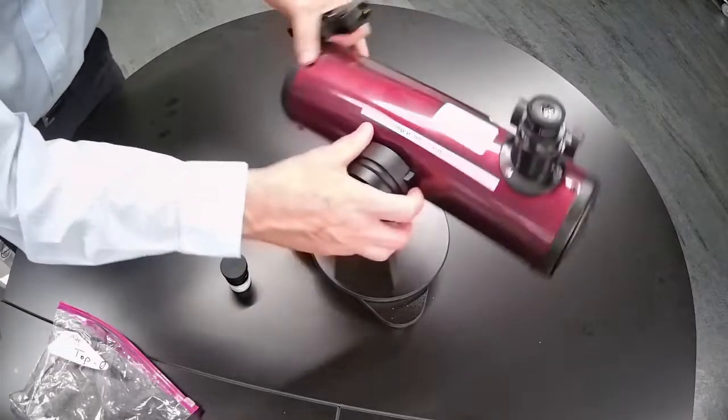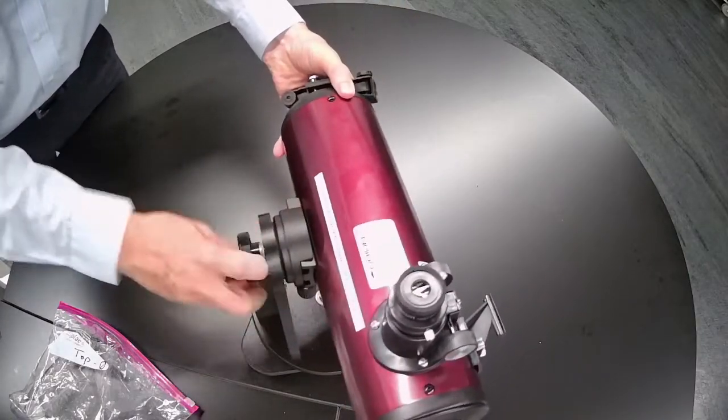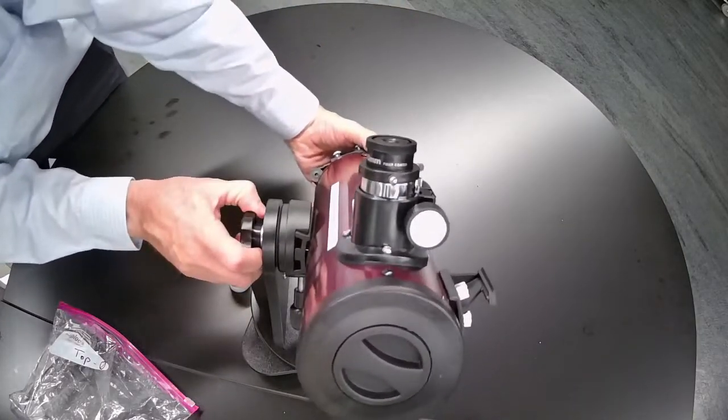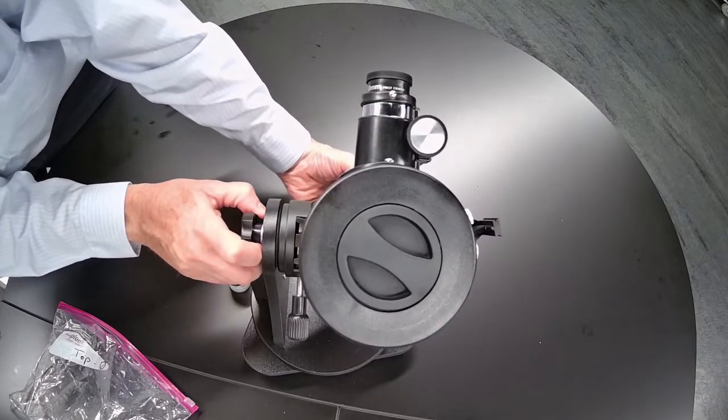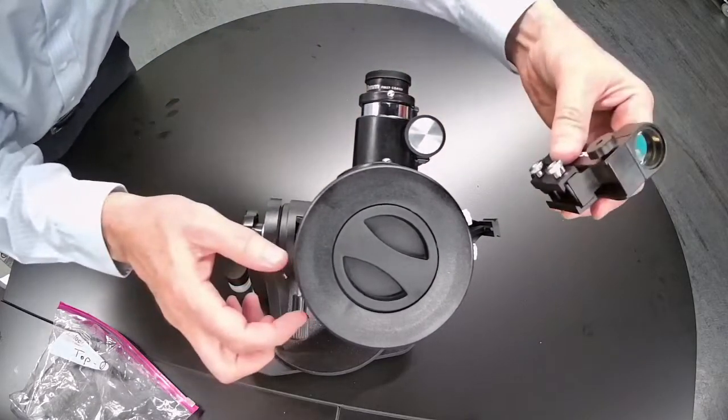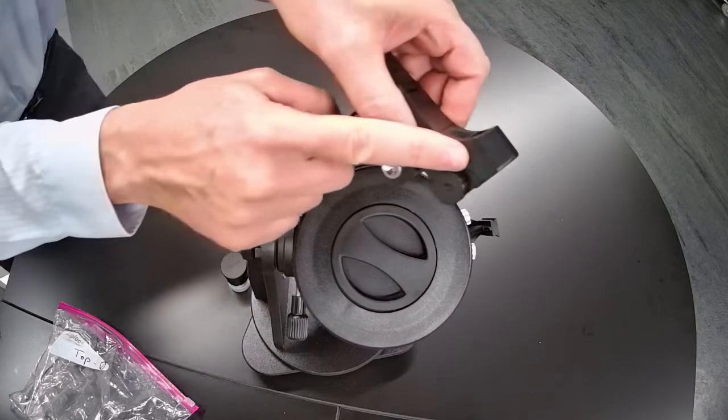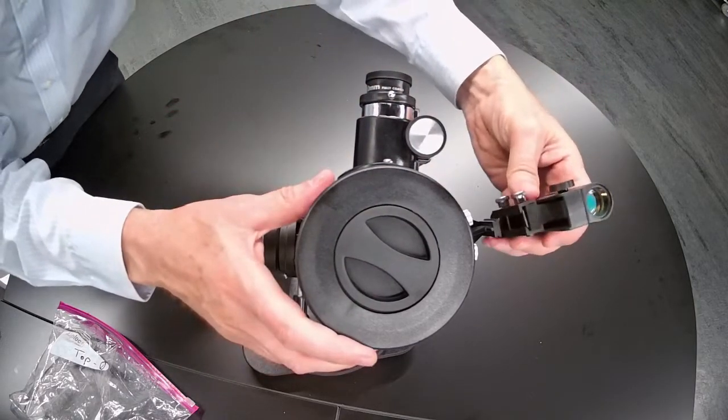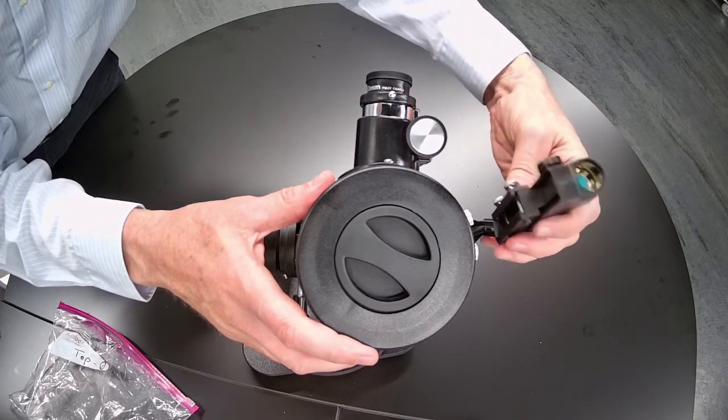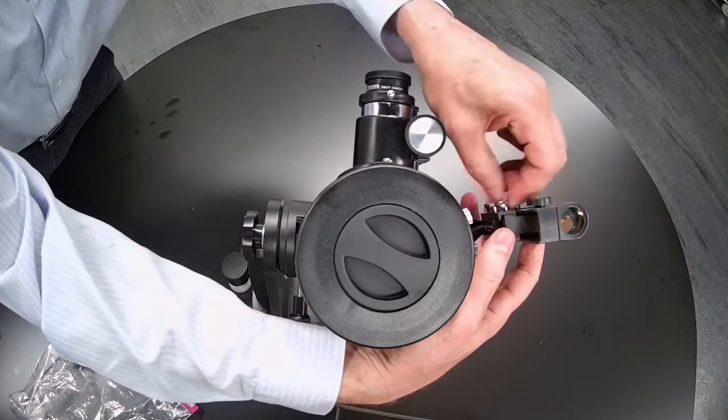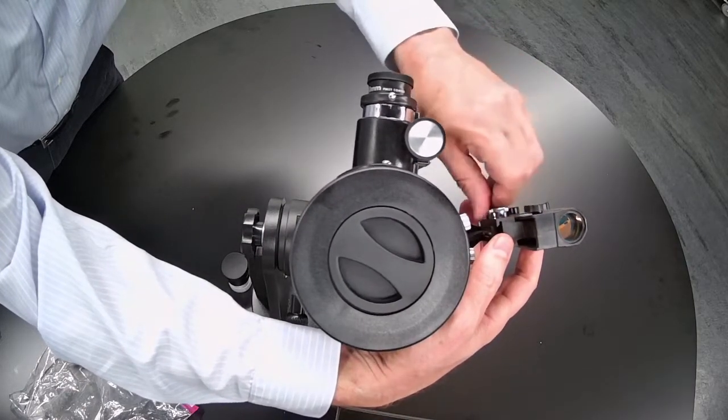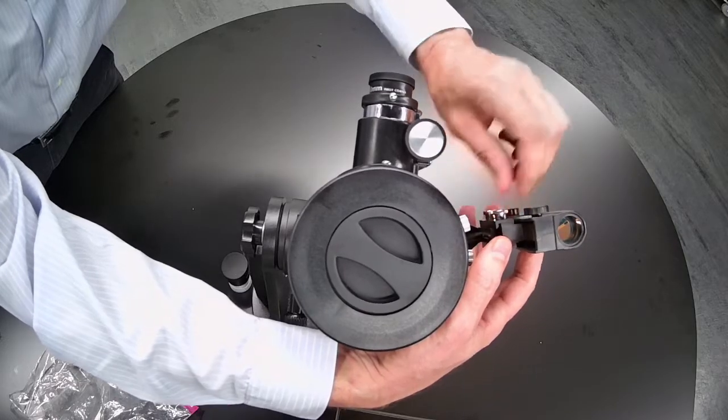The red dot finder goes on to this little dovetail bracket here and it slips on so this end goes at the top towards the sky slips on like this. And then these screws on the side you tighten those and it grips the bracket from the side locks that into place.